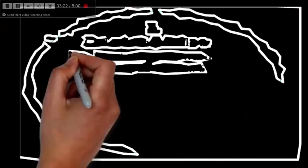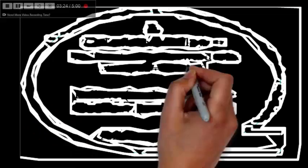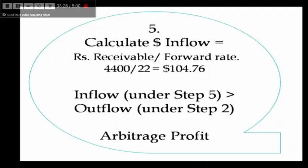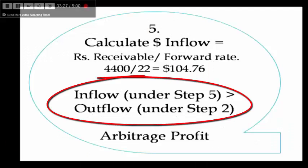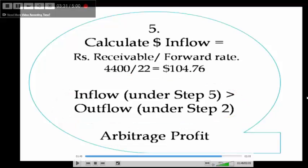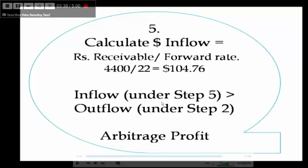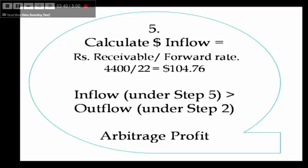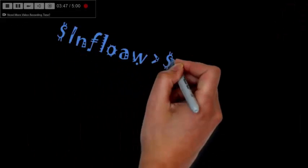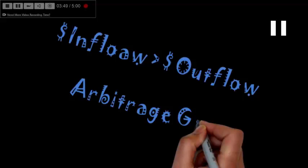Step 5: Calculate the arbitrage gain. The dollar receivable after one year, converting ₹4,400 back at the forward rate of 42, is $104.76. We invested $100, so we have made a gain of $4.76. Whenever the dollar inflow is greater than the dollar outflow, there is an arbitrage gain.